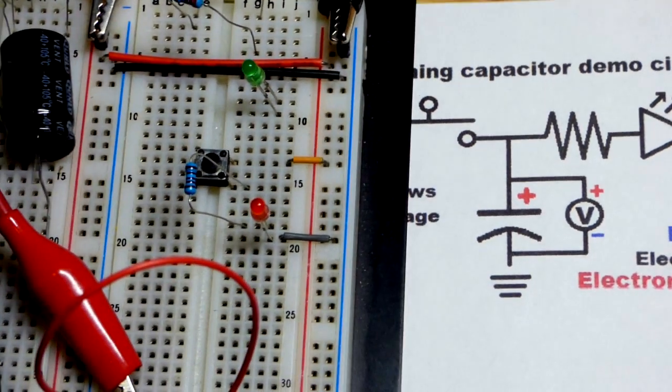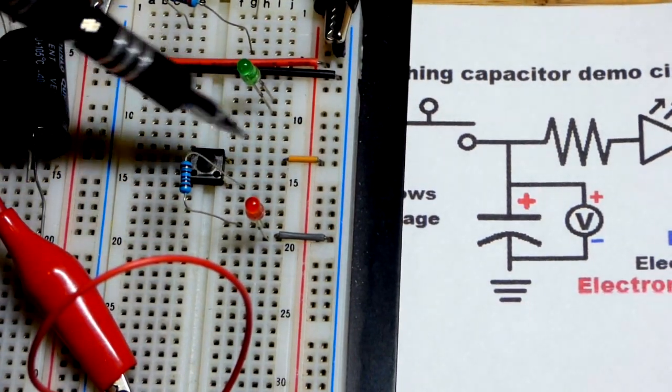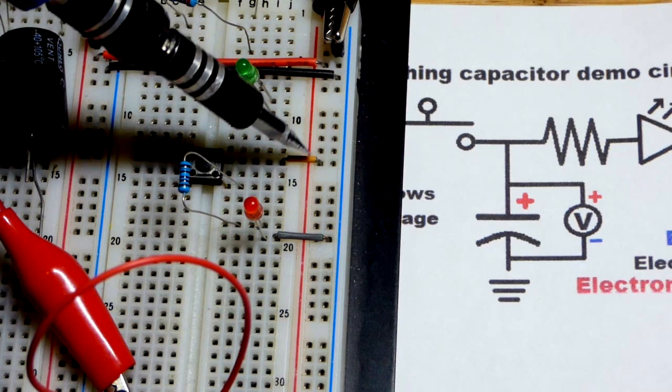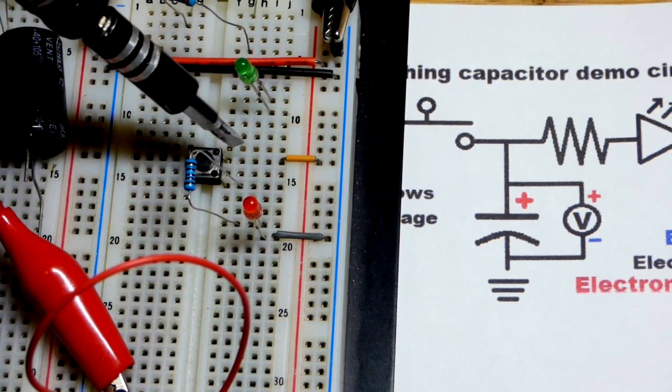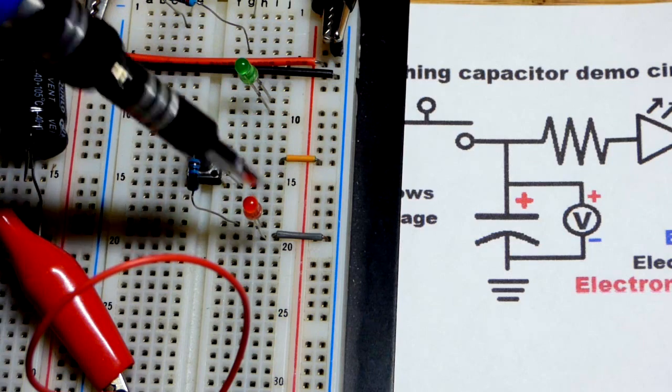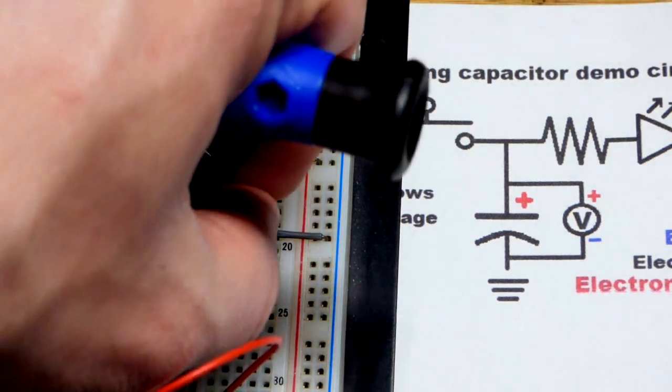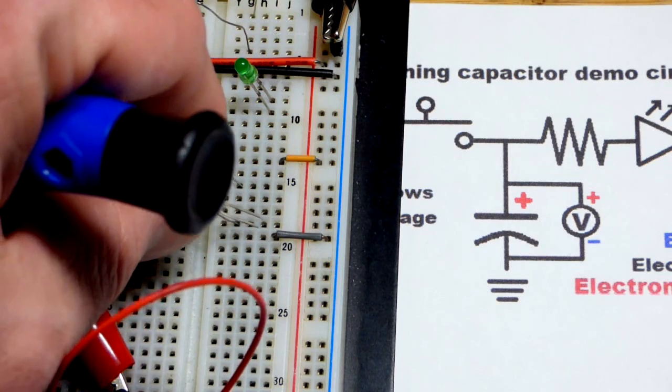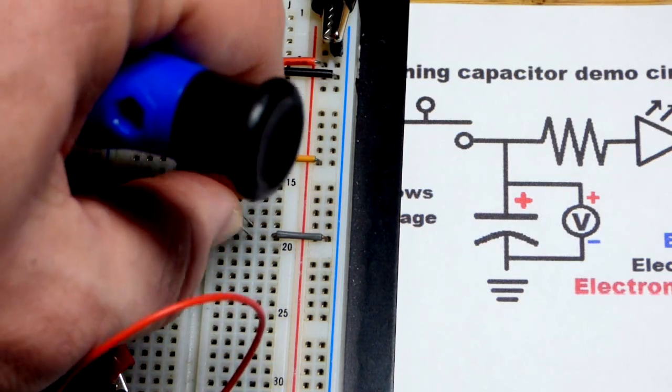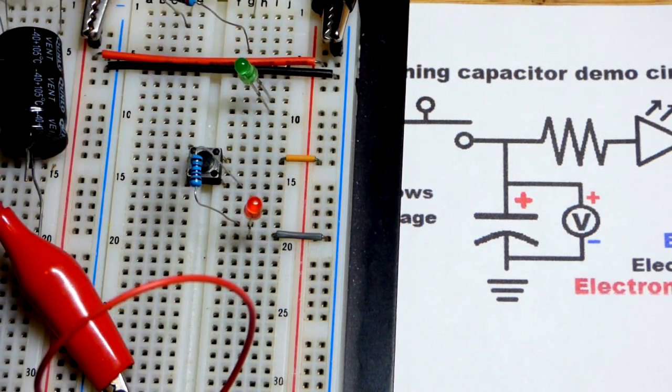So here you can see I have the switch, the orange jumper going to the red rail positive rail, and then the bottom of the switch comes to a resistor there and then an LED. Of course LEDs have to be connected in the right way: long lead, the anode, towards more positive, short lead, the cathode, towards more negative for it to light up.